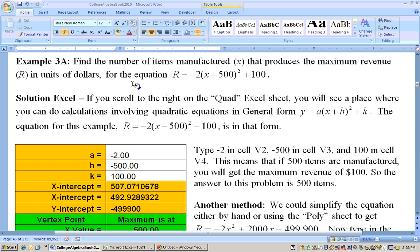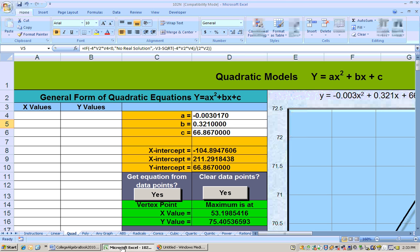Okay, on this example, it says, find the number of items manufactured X that produces a maximum revenue, R, in units of dollars. The equation is R equals negative 2 times the quantity X minus 500 squared plus 100. Well, right here, that's what's making this a quadratic equation. Now, the easiest thing to do on this is go to the quad sheet, and this equation is not in general form like this.